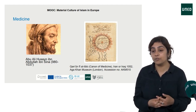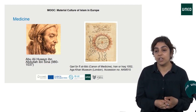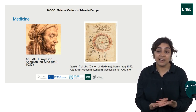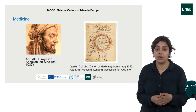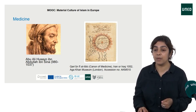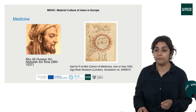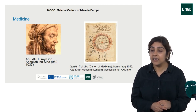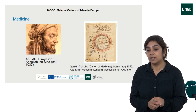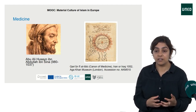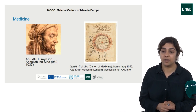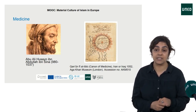We have over 150 works attributed to him, including works on natural philosophy, on allegory such as Hay ibn Yaqzan, thought experiments such as his thought experiment on the flying man, as well as poetry. In particular, he composed two large-scale compendia: a medical encyclopedia, the Canon of Medicine, and a work on natural philosophy, the Kitab al-Shifa, both of which were translated into Latin.